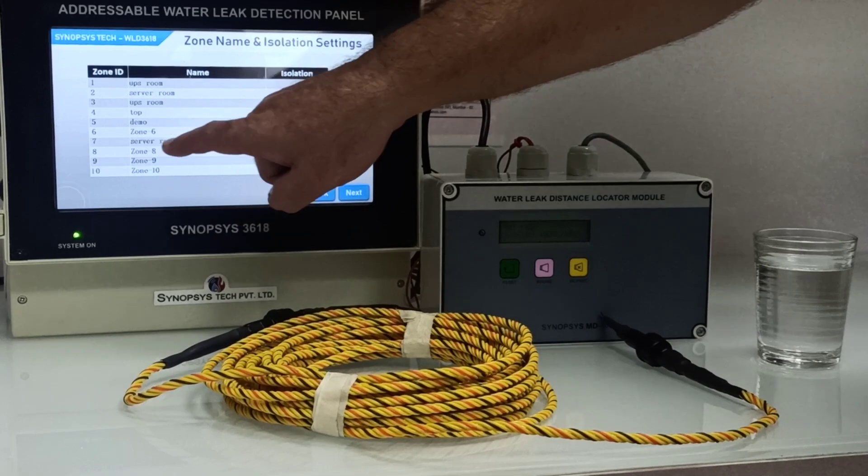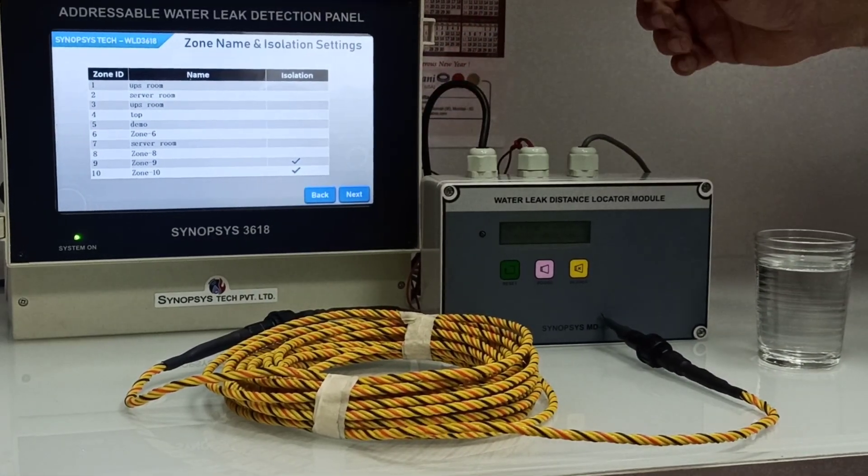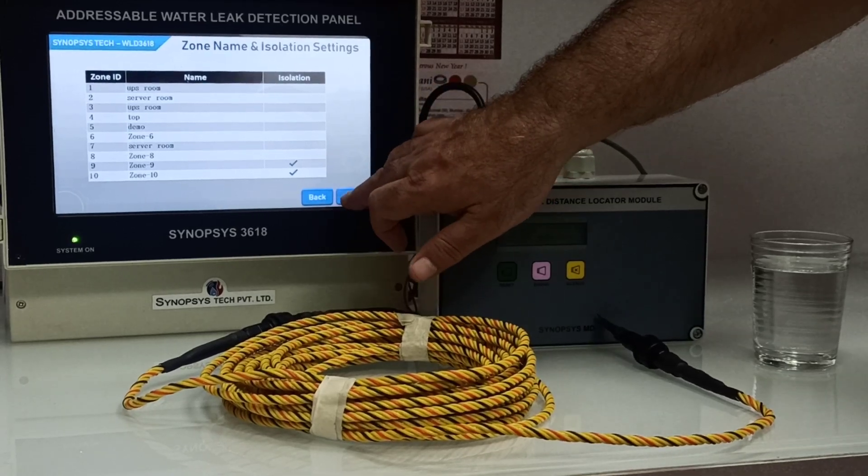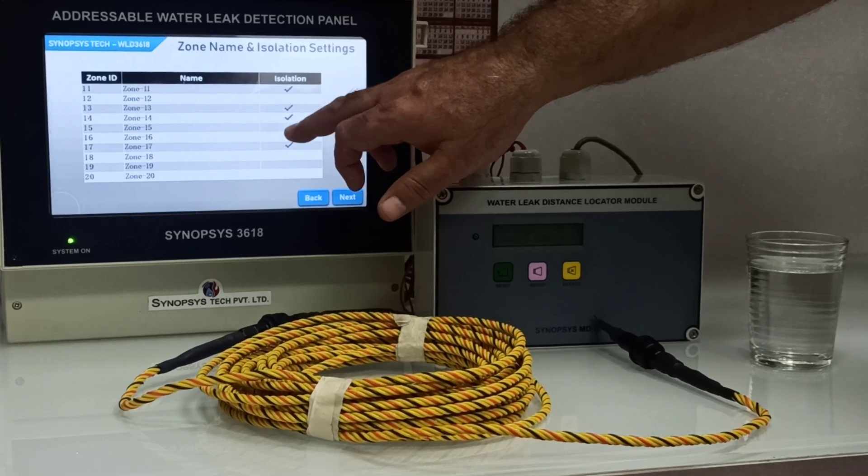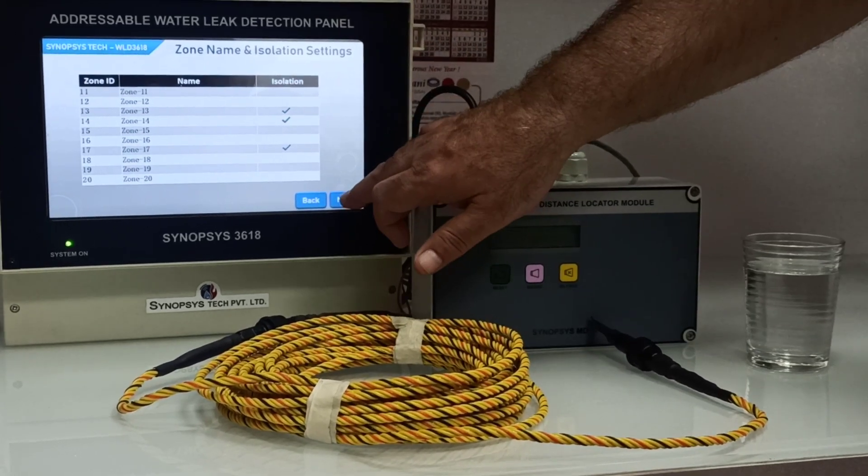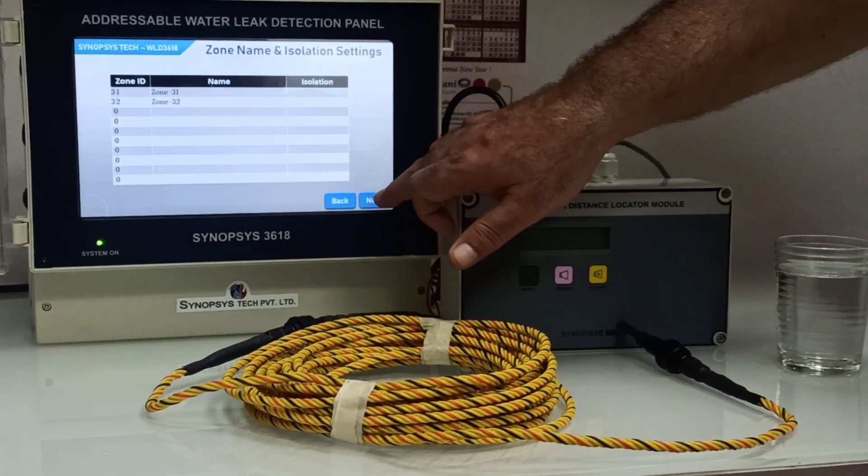If you see, zone 7 has become server room. This is for easy identification. You can similarly isolate the zone, whichever zone you want to isolate for maintenance purpose. This is zone name and isolation settings.